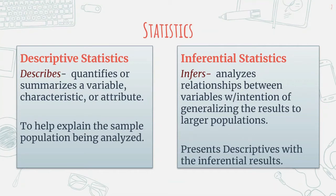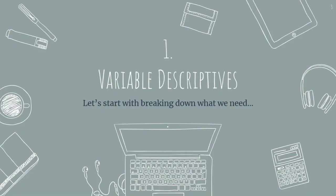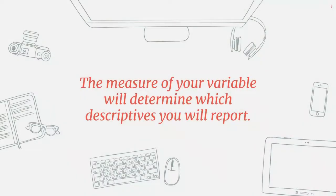So that people know characteristics of the population you're talking about. When we run descriptives, let's start by breaking down what we need to know and what we need to have so that we can accurately report and present the descriptives. The measure of your variable will determine which descriptives you will report.